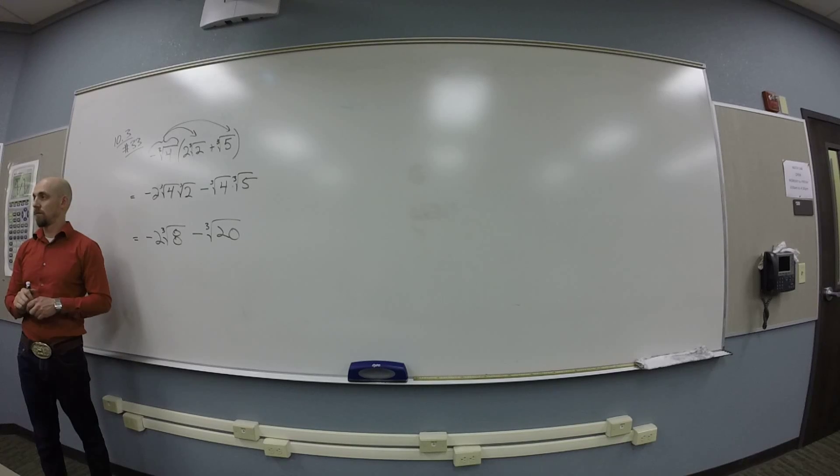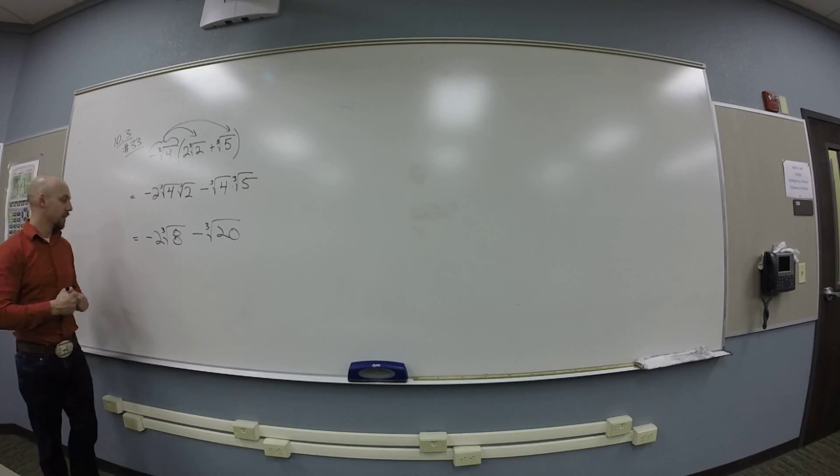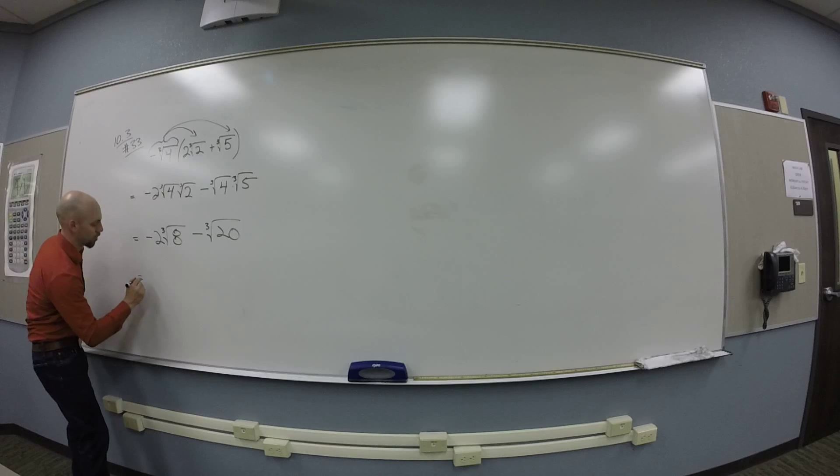And then the cube root of 8, that's 2. So I've got negative 2 times 2. You guys want to make 2 times 2 equal 4? Negative 4. Yes, we could.